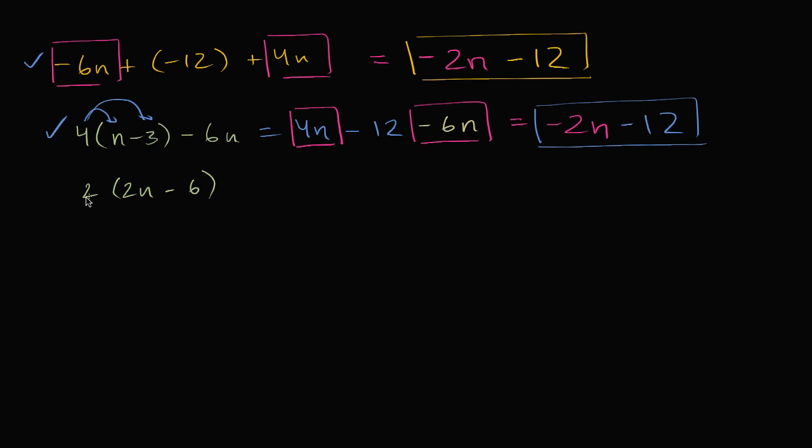Now let's check this one out. So two, let me just distribute, let me just distribute the two. Two times two n is four n, and then two times negative six is negative twelve. So this simplified to four n minus twelve. Which is clearly different than negative two n minus twelve. So this one, this one is not the same as the other two.